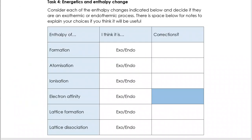Have a think about the energy changes. Enthalpy of formation is always exothermic — always a downward arrow, because you are bringing things together to make something new. If we're atomising something, we're breaking it apart — either separating atoms within a solid or breaking apart diatomic molecules — so that's an endothermic process. Ionisation: we are separating an electron from its atom, which requires energy, so it's endothermic.